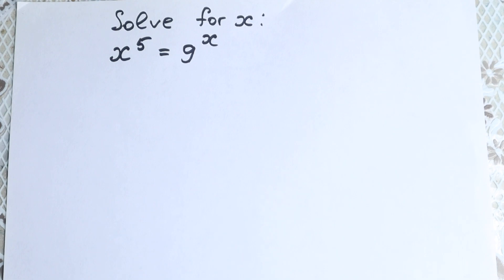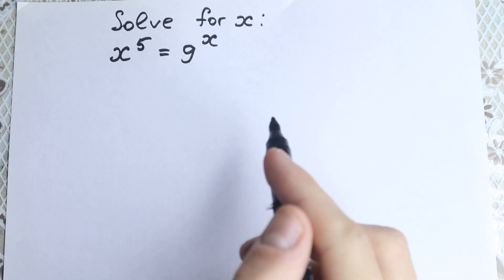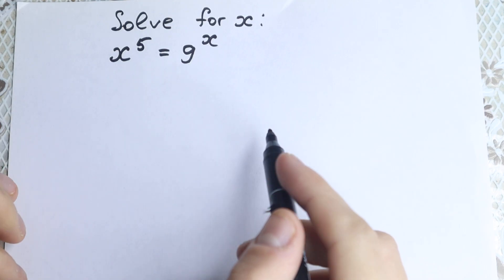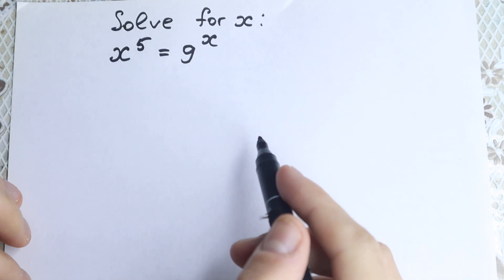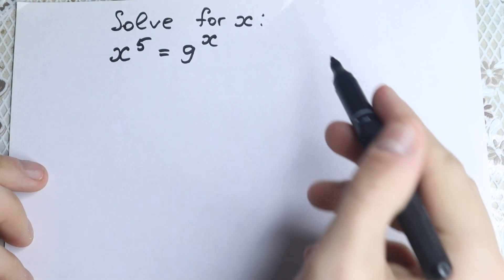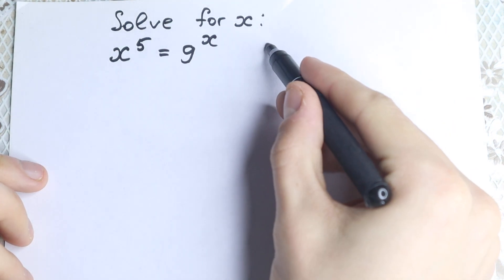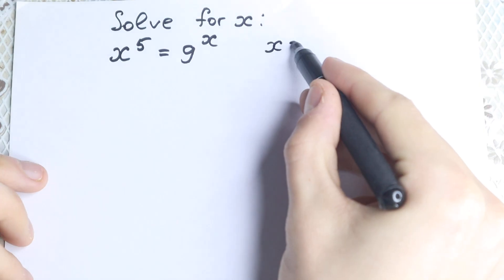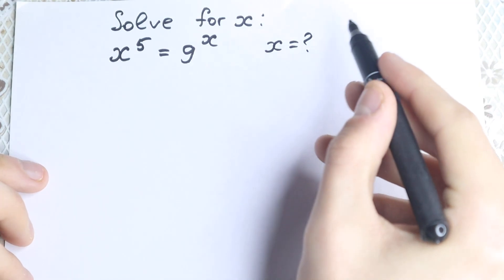Hello everyone! Happy to see you here. In this video we are going to solve this really interesting exponential equation: x to the fifth power equals 9 to the x. What about our x? How can we solve this really interesting problem?